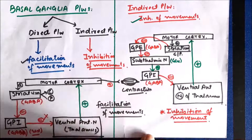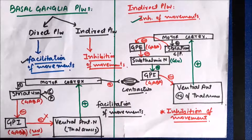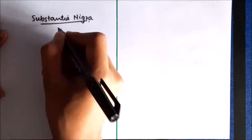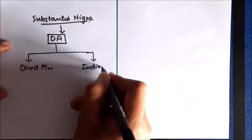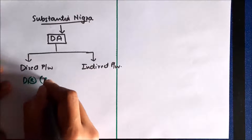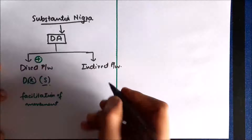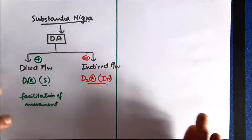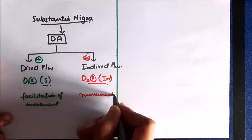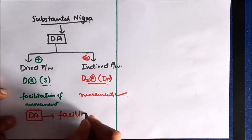An important nucleus not mentioned in either pathway is the substantia nigra, which secretes dopamine. Dopamine has stimulatory effects on the direct pathway via D1 receptors, resulting in facilitation of movement. On the indirect pathway it has inhibitory effects via D2 receptors, inhibiting the inhibitory pathway — so again the net result is that movements occur. Therefore, dopamine in the basal ganglia is associated with facilitation of movements.